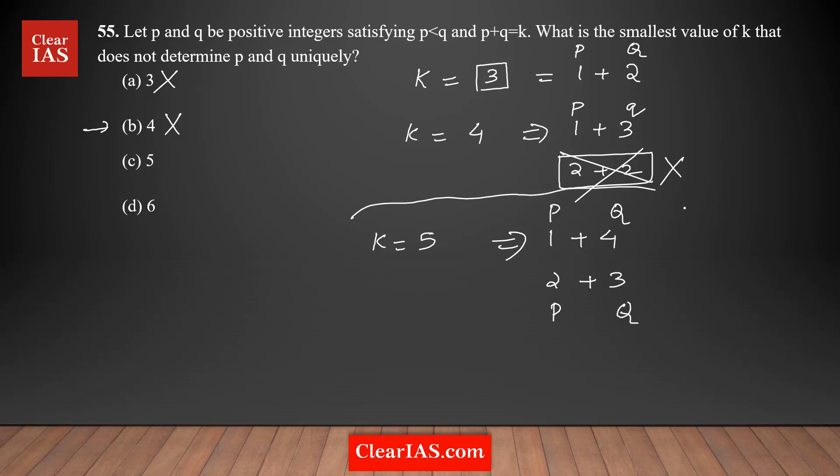In this case, you cannot figure out the unique values of P and Q because different values are possible. The answer is option C. 5 is the minimum value, the smallest value of K as per the question. Option C is the right answer.